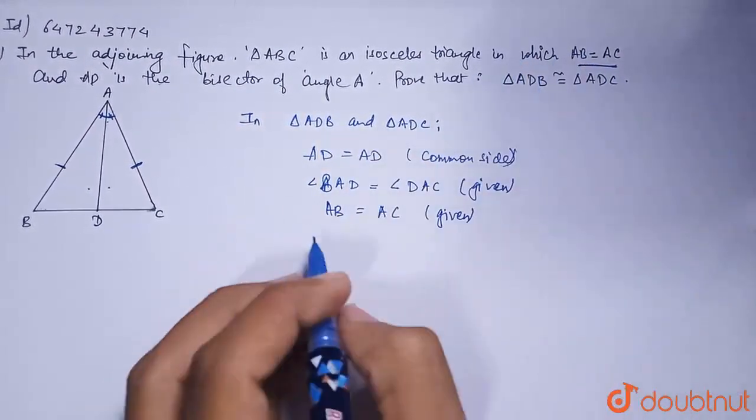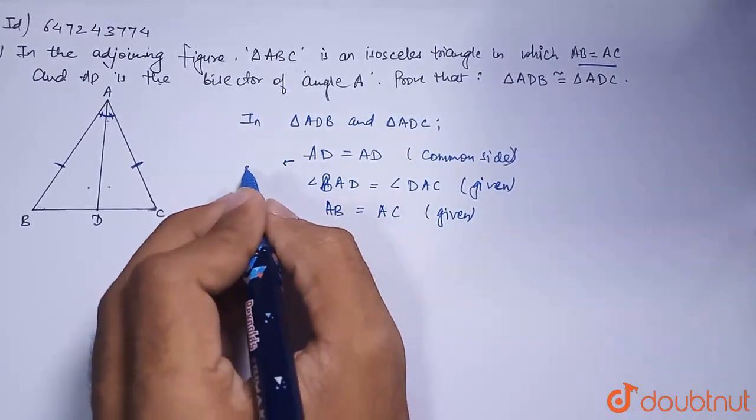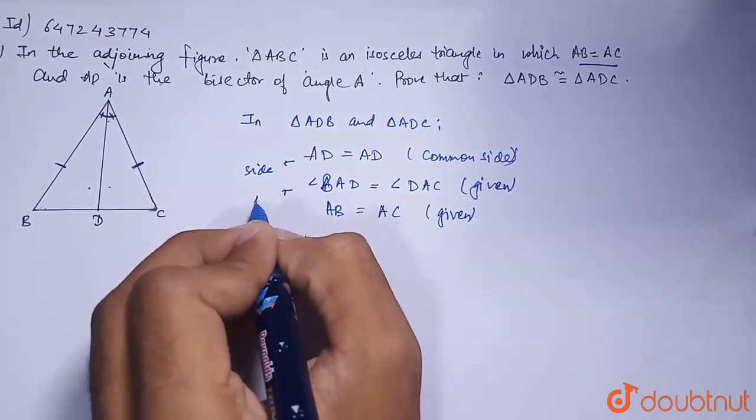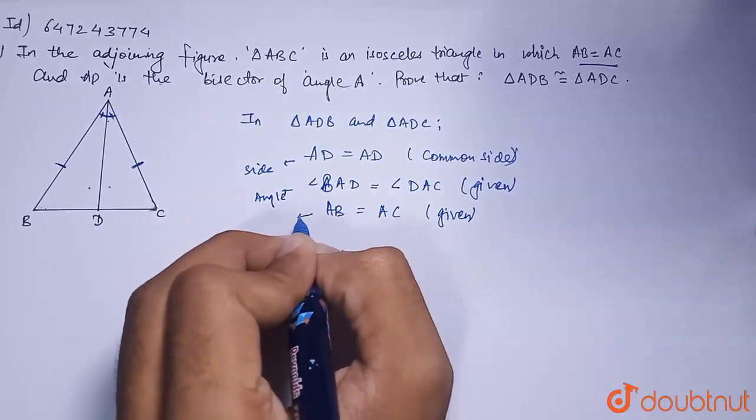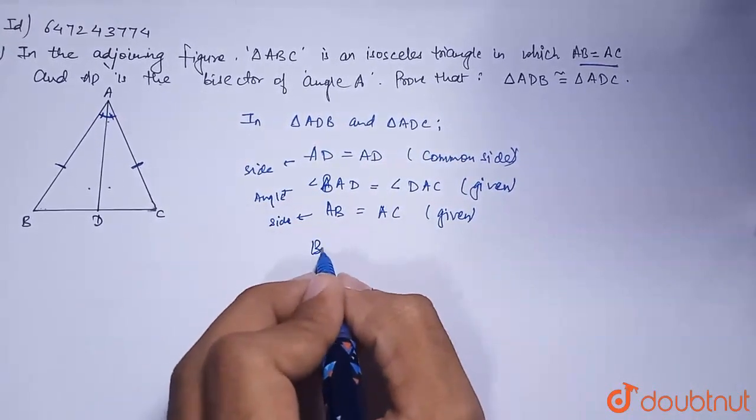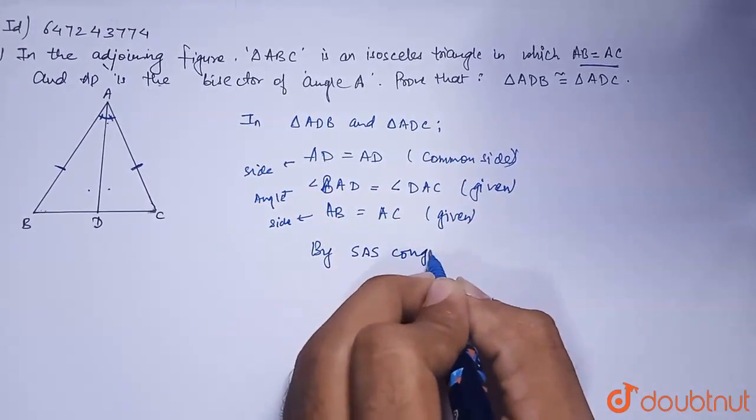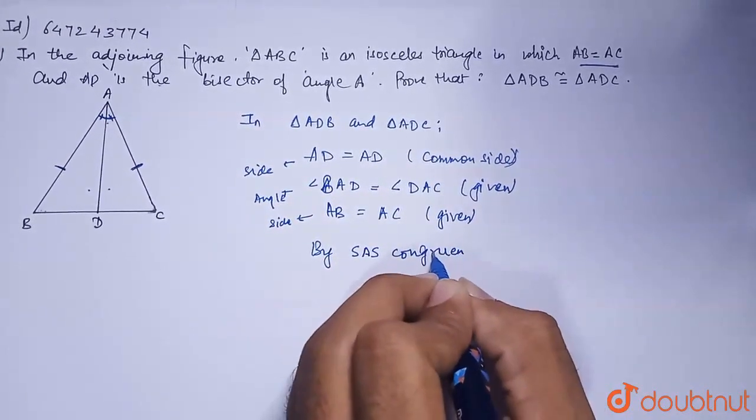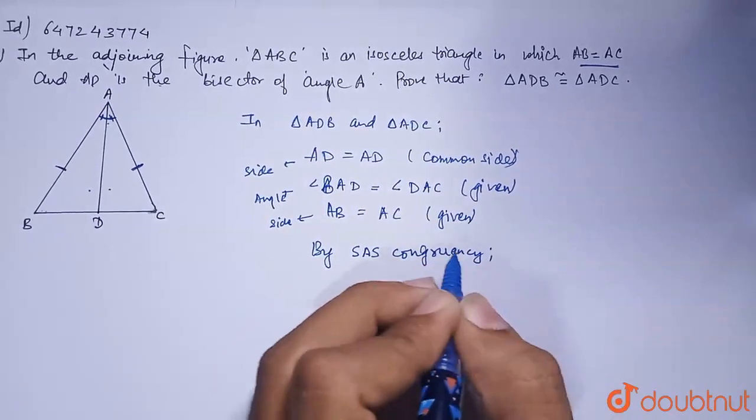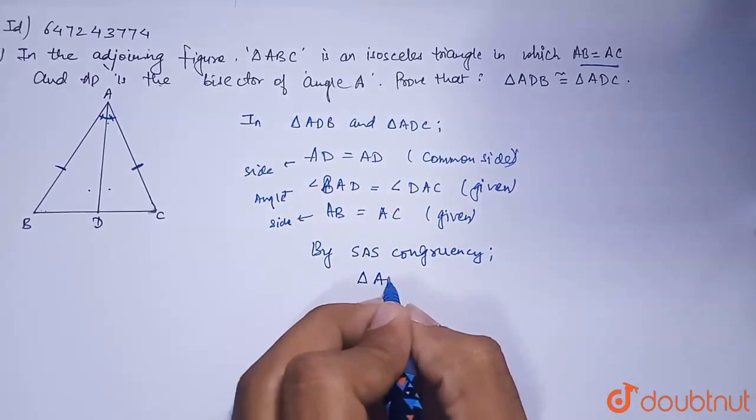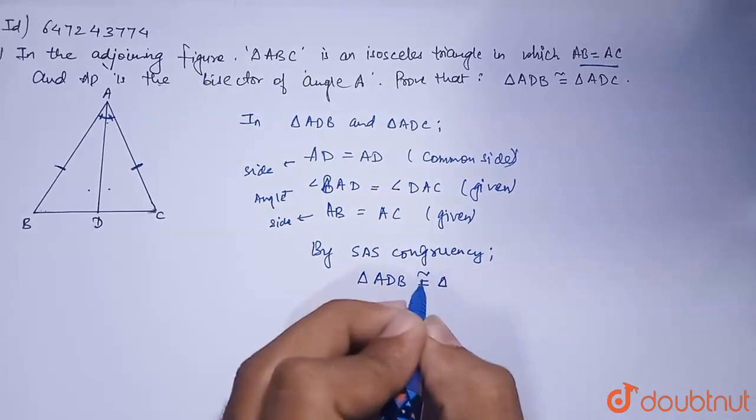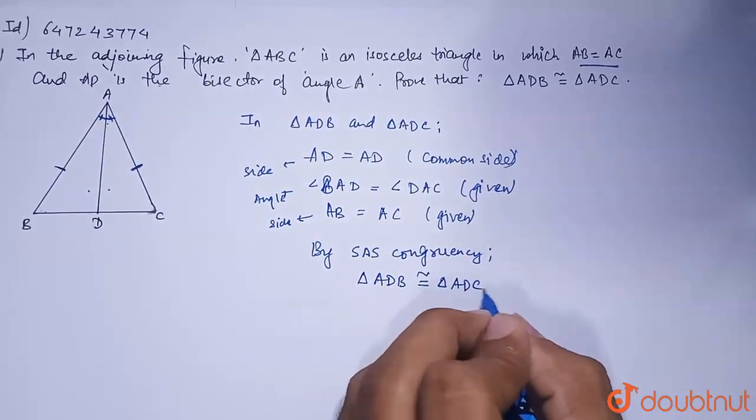Third, AB equals AC, which is given. Here is our side and this is angle and this is side. By side-angle-side congruence, triangle ADB is congruent to triangle ADC.